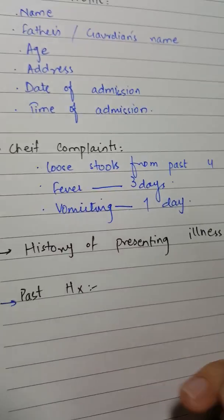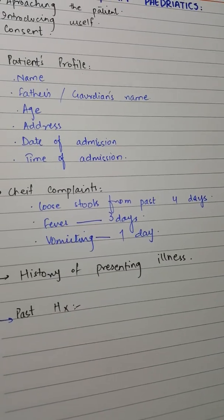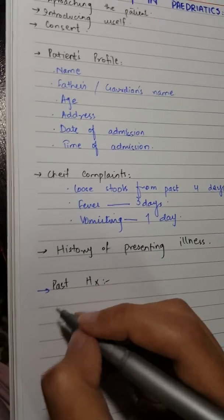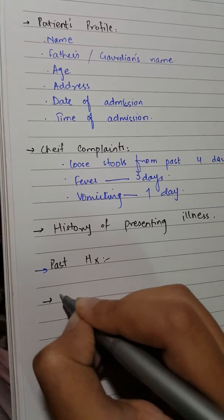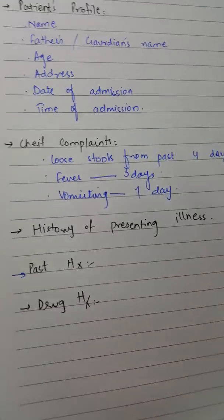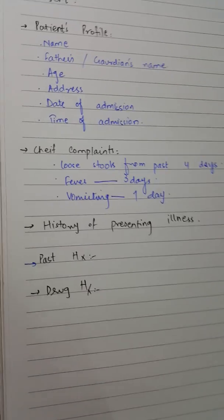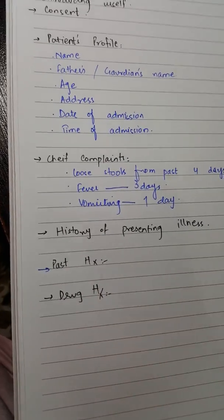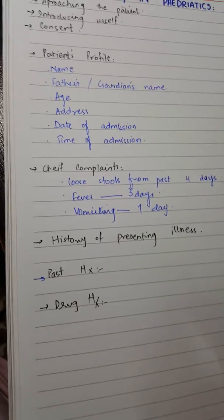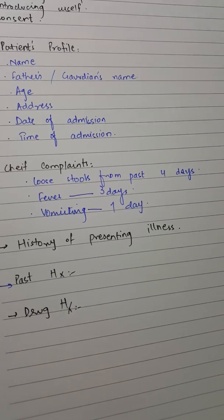In past history, you ask the patient about any surgical or medically relevant admissions, or any diseases that he or she is suffering from. Then the next heading is drug history. In drug history, you ask about any drugs or medications the patient is currently on or has been taking for several months, years, or days. It is important to know which medications your patient is already on.